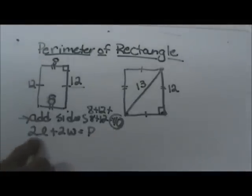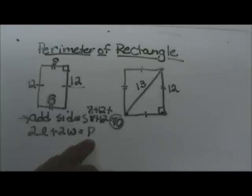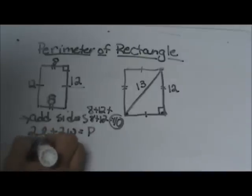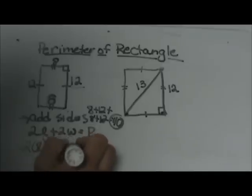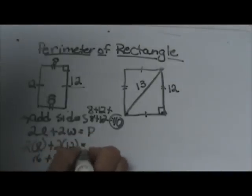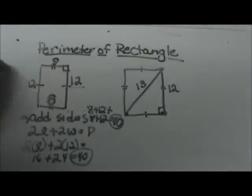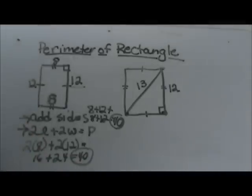The other option is to plug into the formula: 2 lengths plus 2 widths is equal to perimeter. So our length is 8. So 2 times 8 plus 2 times 12. That would give us 16 plus 24, which is also 40. So you have two options: you can just add all four sides up, or you can use the formula 2 lengths plus 2 widths.